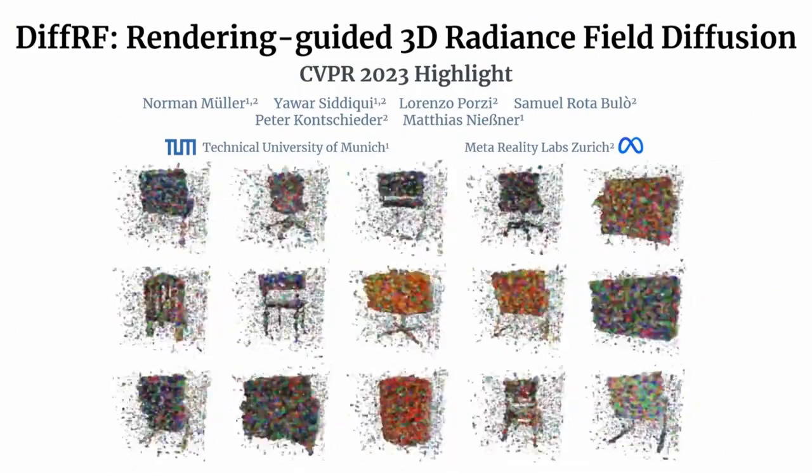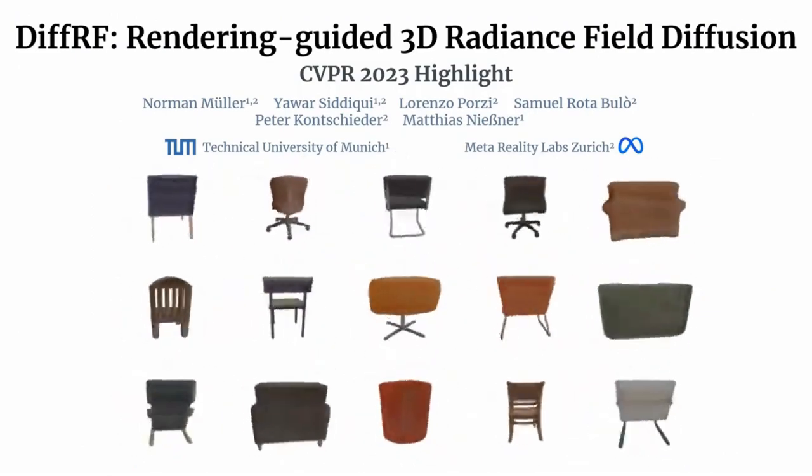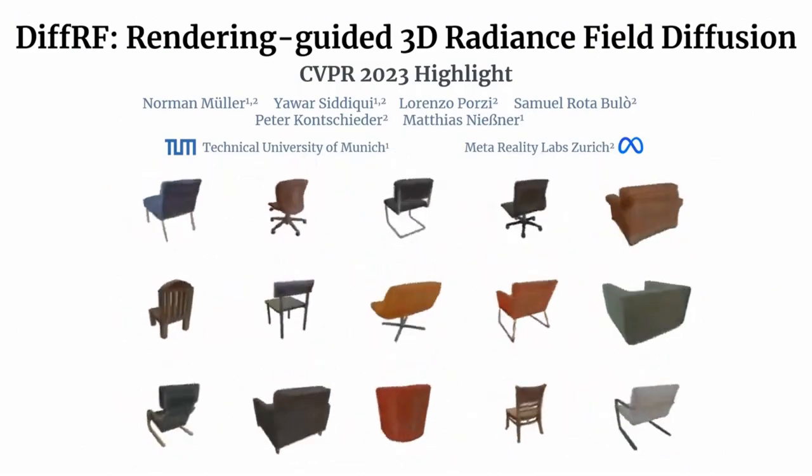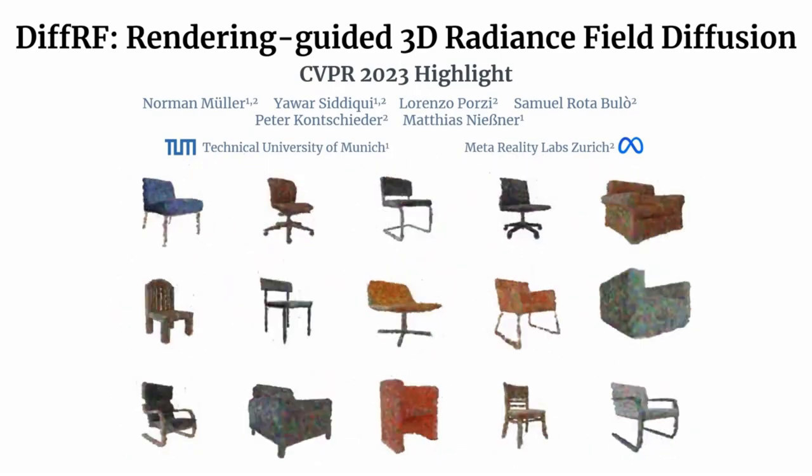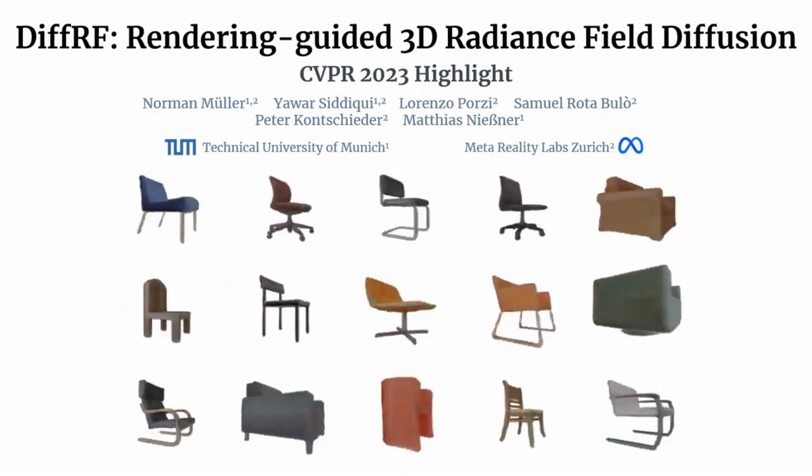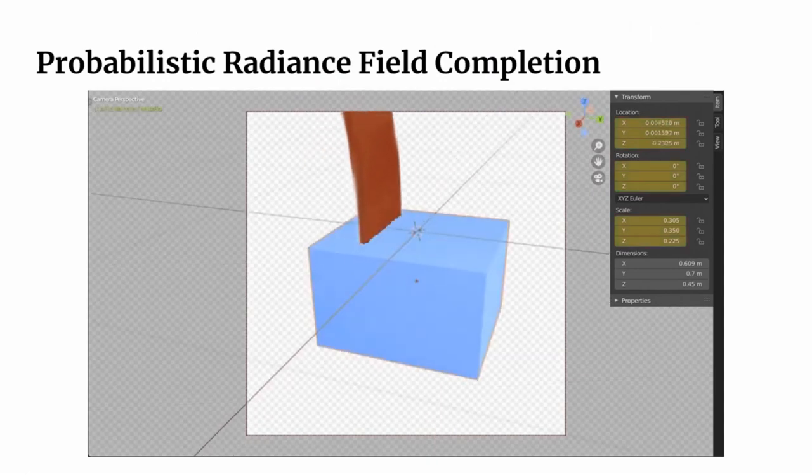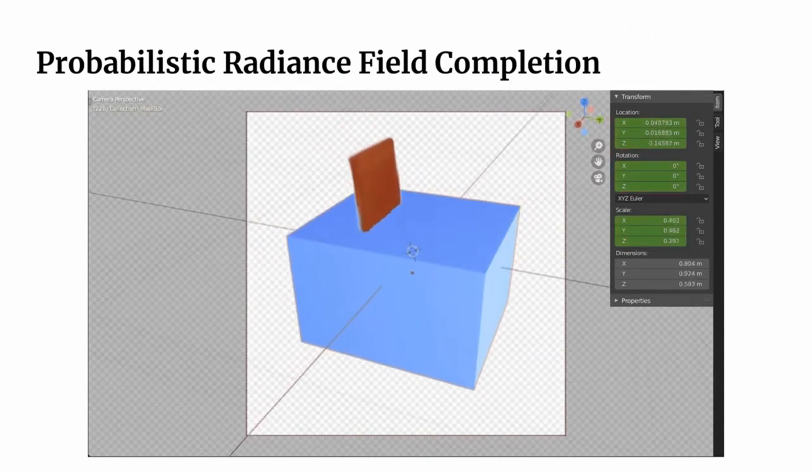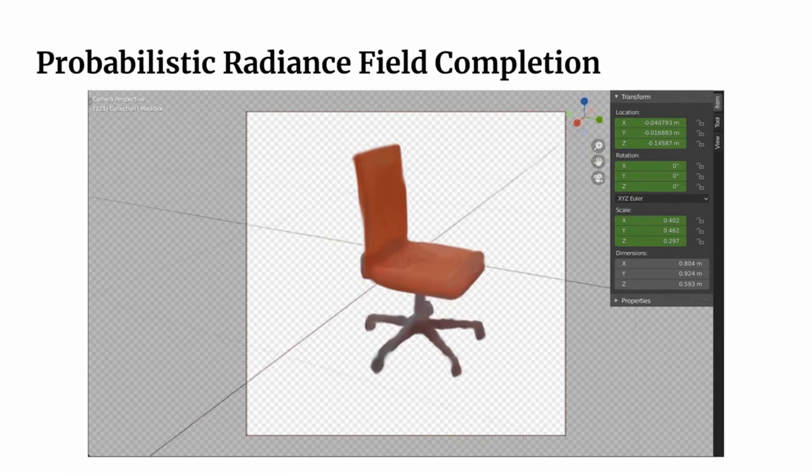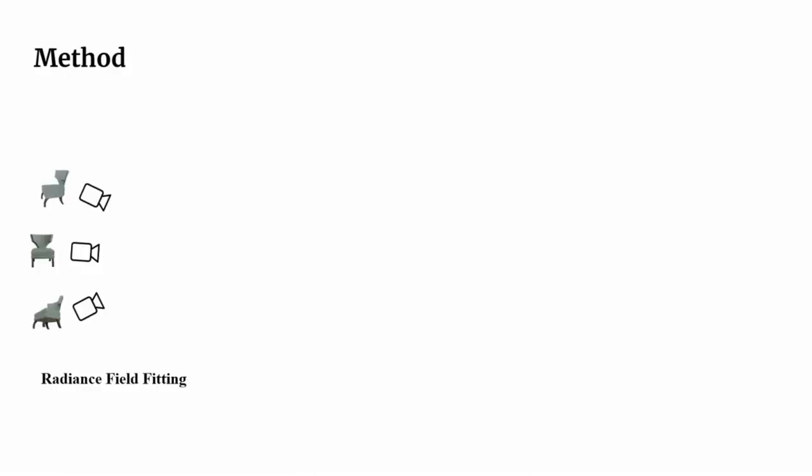We present DIFFRF, a novel approach for 3D radiance field diffusion with rendering guidance. In contrast to existing diffusion-based methods, we operate directly on radiance fields enabling unconditional synthesis and novel conditional tasks like masked radiance field completion using the strong synthesis prior learned by our model.